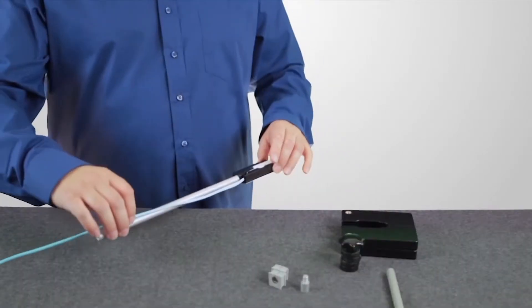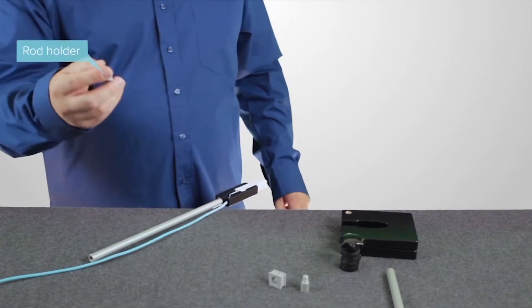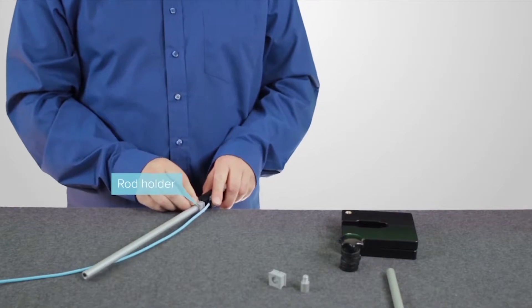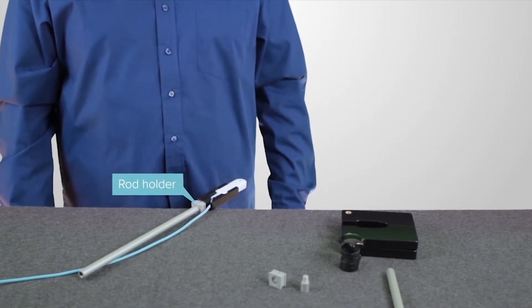You can place it over the edge of an examination table. You can also use this little rubber piece to make the rod stay firm and secure on the table.